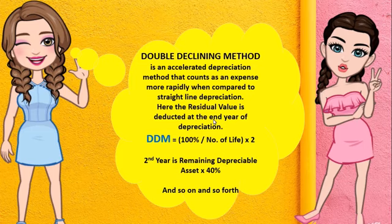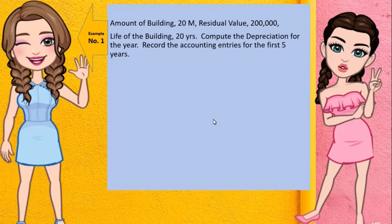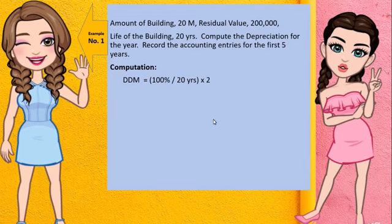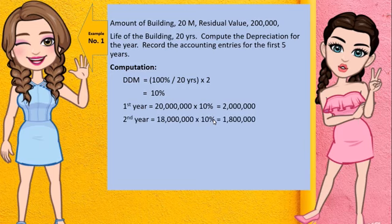So how to compute the Double Declining Method? Here's the computation. Amount of building is 20 million; residual value will not be computed yet — it will be deducted at the end of the last year. The computation: 100% divided by 20 years multiplied by 2 equals 10%. For the first year, 20M multiplied by 10% gives a depreciation of 2 million. For the second year, 20M minus 2M gives a book value of 18M multiplied by 10%, so the depreciation for the second year is 1,800,000.